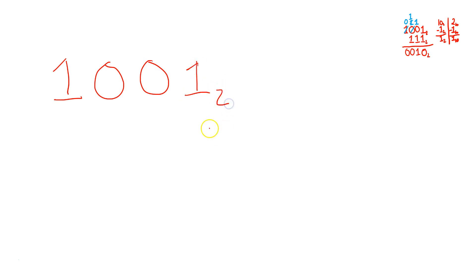And this is in binary form, so put a 2 subscript. And then also 1, 1, and 1 like that, also in binary form. And we're going to subtract.